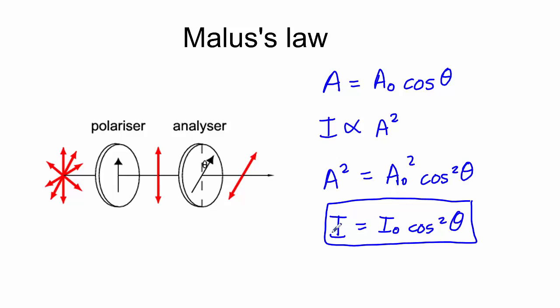It allows us to work out the intensity of light that has passed through a polaroid filter by knowing the initial intensity and the angle between that filter and the polarized light.